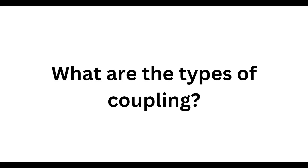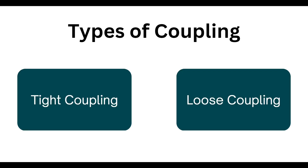There are two types of coupling: tight coupling and loose coupling. This terminology is not limited to microservices — it can be covered in various software concepts. Your code could be tightly coupled or loosely coupled, and similarly in microservices we have these same types of coupling.